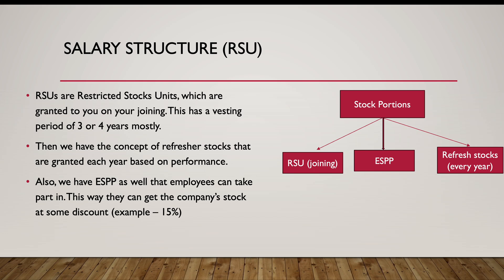RSUs are restricted stock units granted to you on joining, with a vesting period of three to four years. For example, if you get an RSU of $10,000 with a four-year vesting period, you divide the total by four — that is $2,500 USD per year. The vesting period is essentially a company strategy to retain you by giving you a motive to stay and receive your stocks.